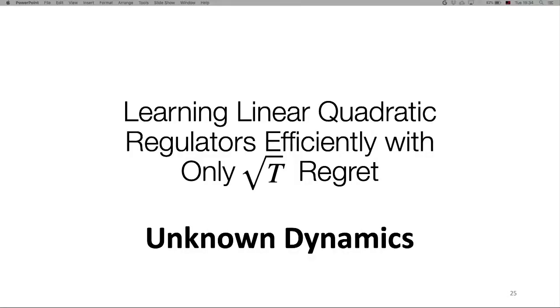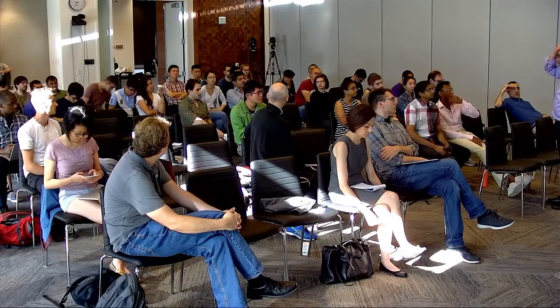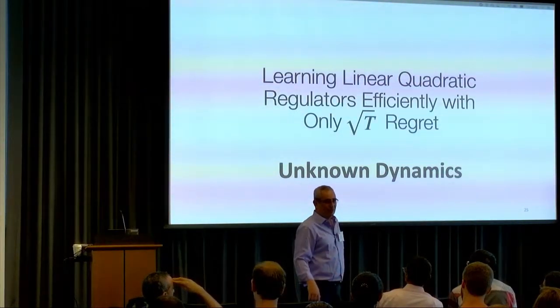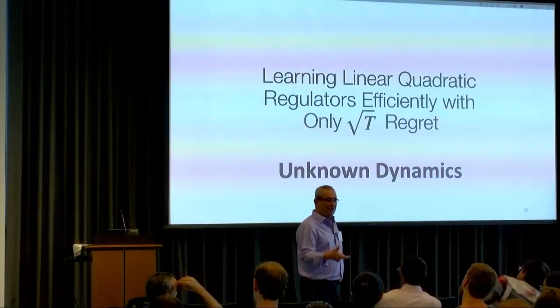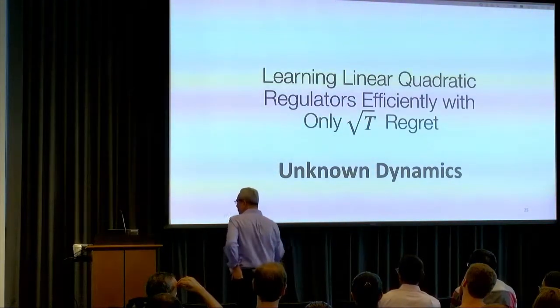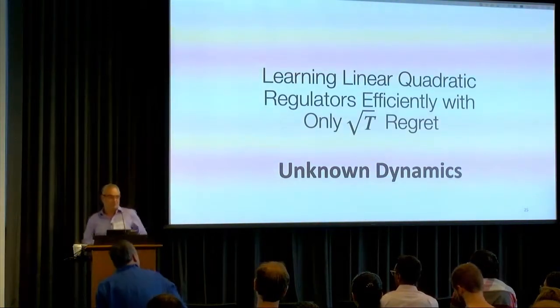In the 10 minutes I have left, I want to talk about the second part — the unknown dynamics. The root T bound has polynomial dependence on dimension. You can use various online learning methods: we use gradient descent, follow-the-leader; you can use whatever you like because things change slowly and you have all the desirable online learning properties.